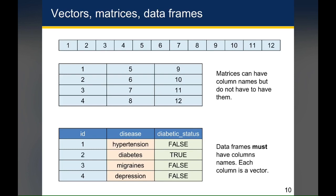On the other hand, a data frame has to have column names, and each column is a vector. So in this data frame that I'm showing you here, the ID column is a numeric vector or an integer vector with the values 1 through 4. Disease is a character vector with four different types of diseases listed there, and diabetic_status is a logical vector with true and false values.